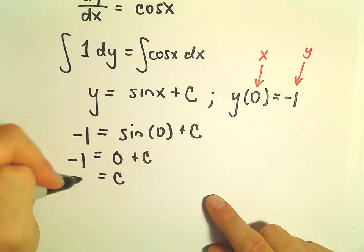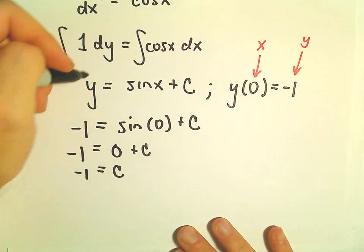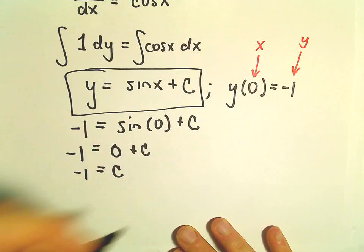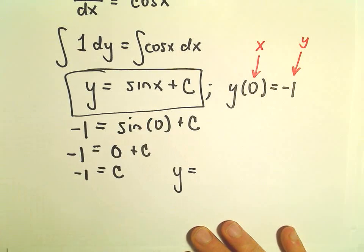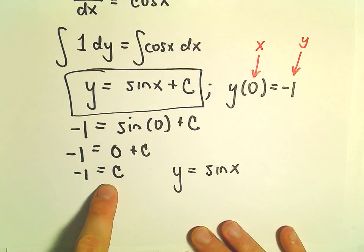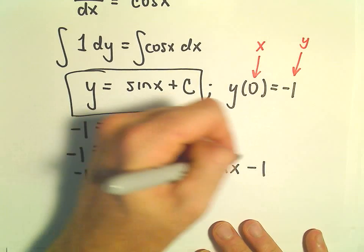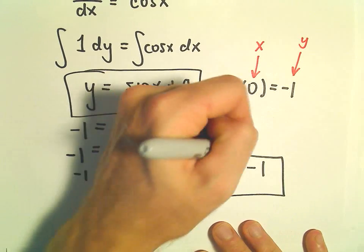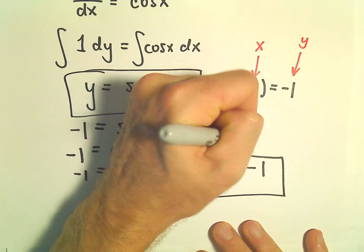So therefore, we would take our general solution, and our particular solution would be y equals sine x plus C, which is going to be negative 1. And now we've got our particular solution.